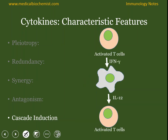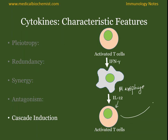The final property is cascade induction, where activation of T cells and production of interferon gamma would activate the macrophage. The activated macrophage produces IL-12, which acts on the T cell for its activation. This again leads to increased production of interferon gamma. There is a positive loop where activation of one cell leads to the secretion of one cytokine, which in turn activates the next cell to produce the next cytokine.